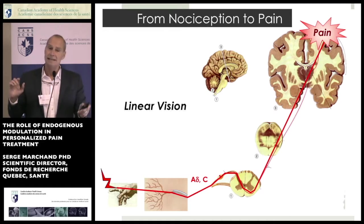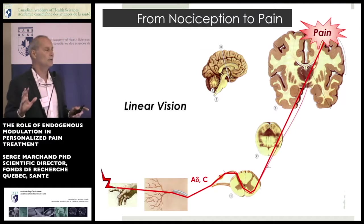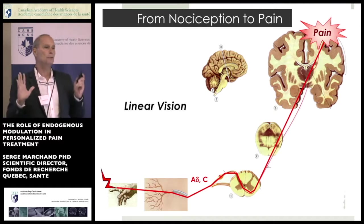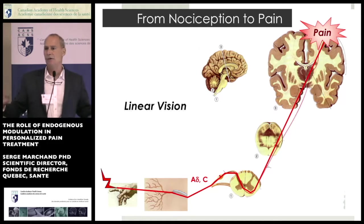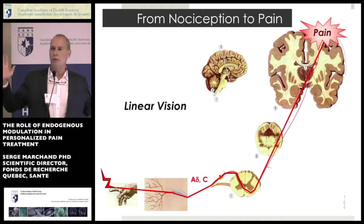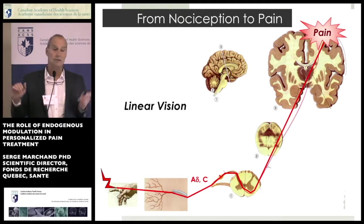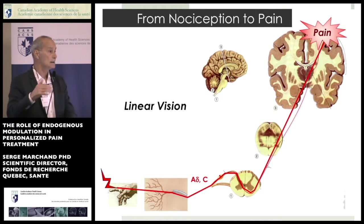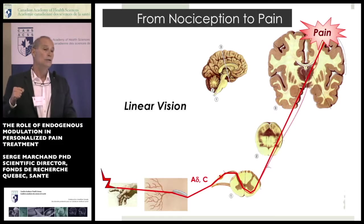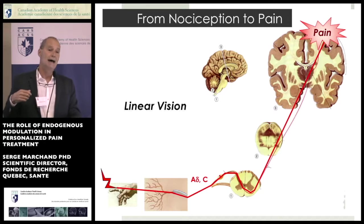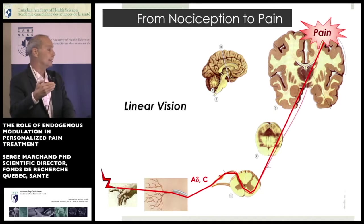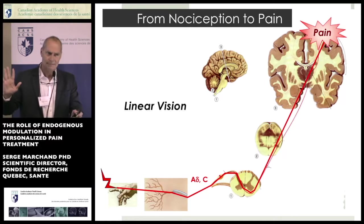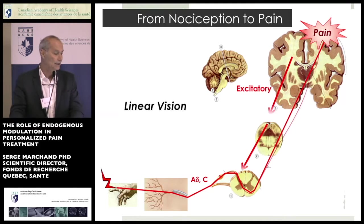This is a very linear vision, and if we stayed on this linear vision, we would cut the signal anywhere and we would be okay — but it's not working at all. In some cases, you can even have what we call anesthesia, but a painful anesthesia in some lesions. Then something else is happening.